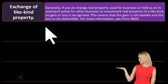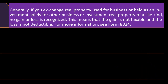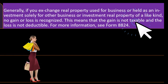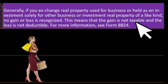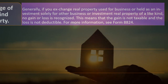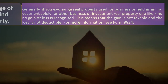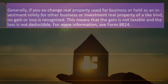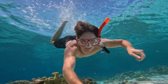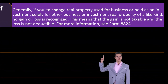Exchange of like-kind property: generally, if you exchange real property used for business or held as an investment solely for other business or investment real property of like kind, no gain or loss is recognized. This means the gain is not taxable and the loss is not deductible. For more information, see Form 8824. There is extensive material on like-kind exchanges — it's a topic that could fill an entire course.